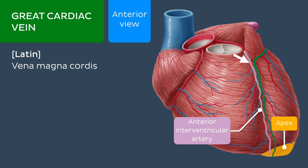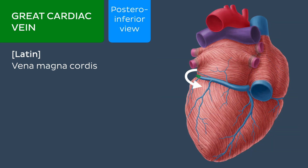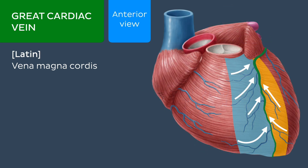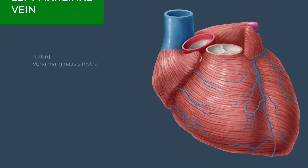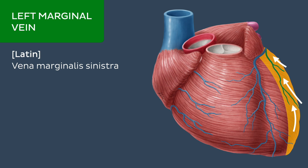As it reaches the coronary sulcus, it passes to the left, accompanying the circumflex artery, before eventually draining into the coronary sinus. The great cardiac vein drains the anterior surface of both ventricles and the left atrium. The great cardiac vein itself commonly receives the left marginal vein as a tributary, which courses the left side of the heart.